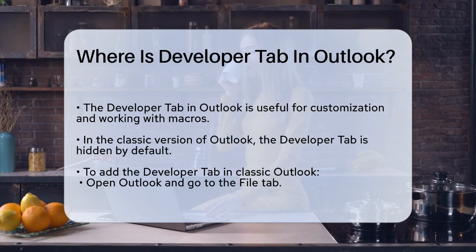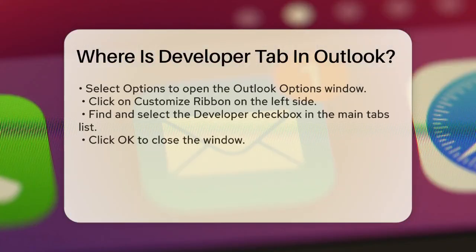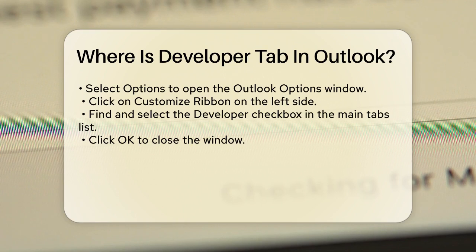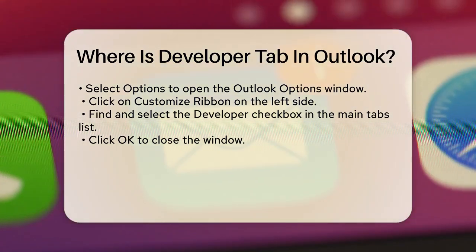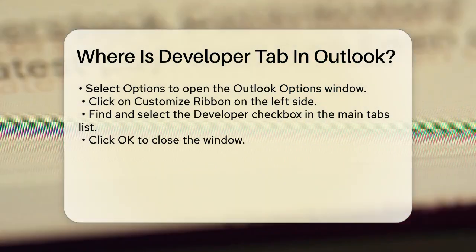First, let's talk about the classic version of Outlook. In this version, the Developer tab is not visible by default, but you can easily add it. Here's how: Open Outlook, go to the File tab, and select Options. This will open the Outlook Options window. From there, click Customize Ribbon on the left side. In the list of main tabs, find the Developer checkbox and select it. Then click OK to close the window. Now you should see the Developer tab on your ribbon.